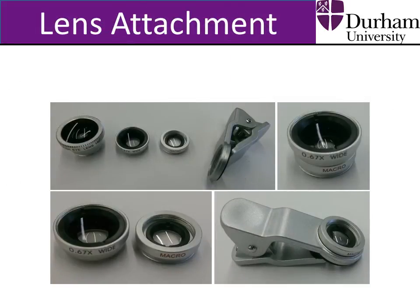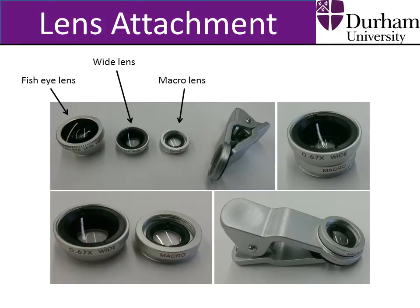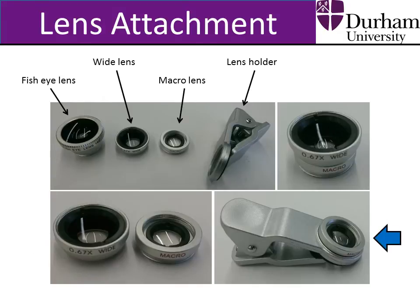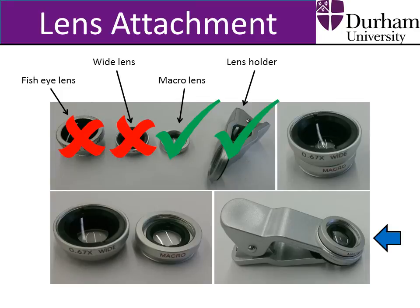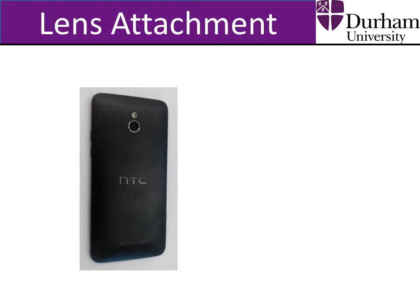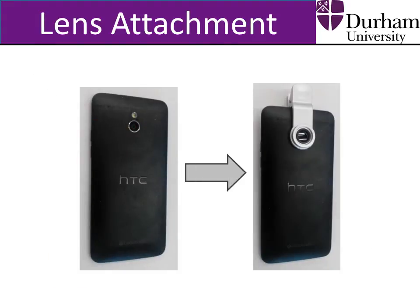To use this method, remove the lens attachment components, which consist of the fisheye lens, the wide lens, the macro lens, and the lens holder. The wide lens may be attached to the macro lens. If this is the case, unscrew the macro lens from the wide lens, and then screw the macro lens into the lens holder. The other lens attachments are not required in the contact angle measurements.